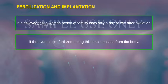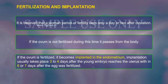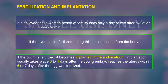If the ovum is not fertilized during this time, it passes from the body. If the ovum is fertilized, it becomes implanted in the endometrium. Implantation usually takes place three to four days after the young embryo reaches the uterus, within six to seven days after the egg was fertilized.